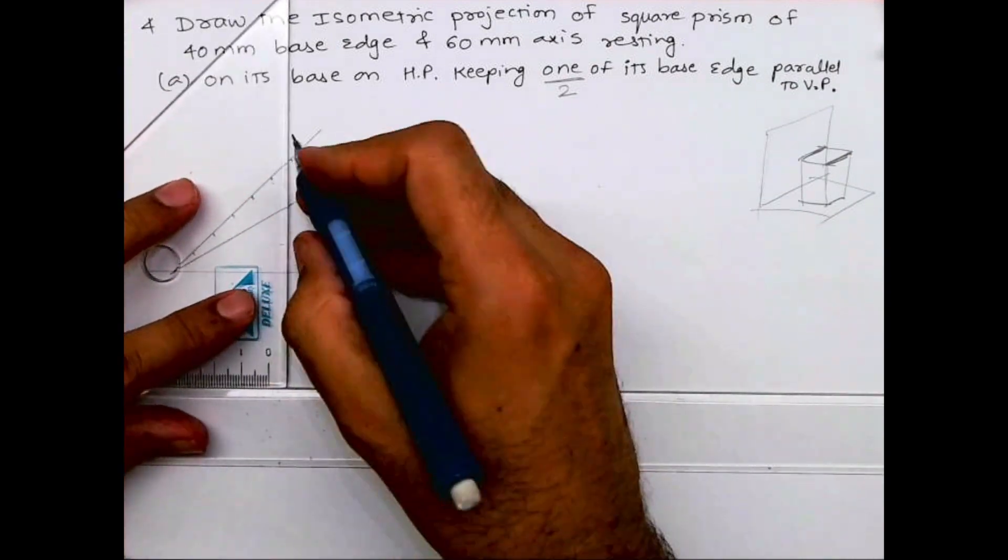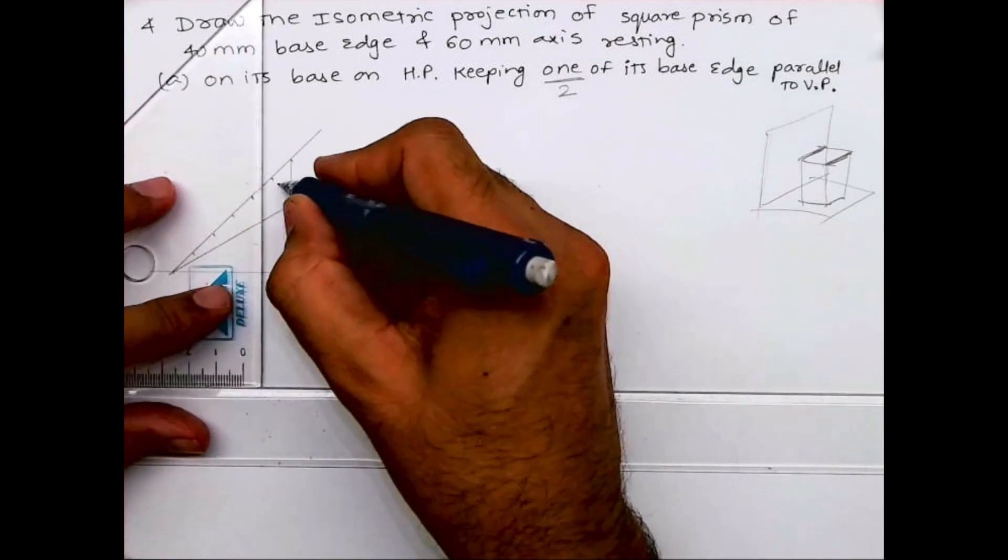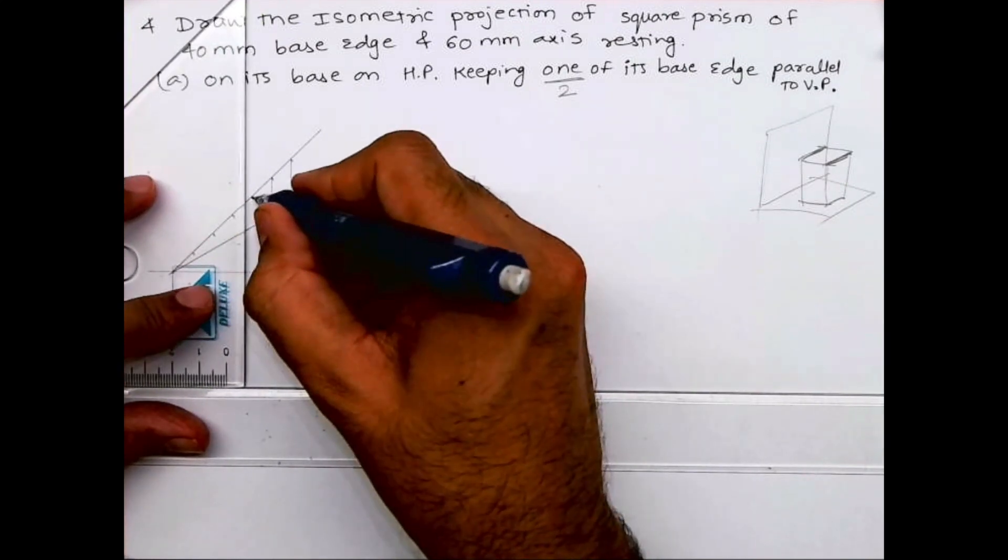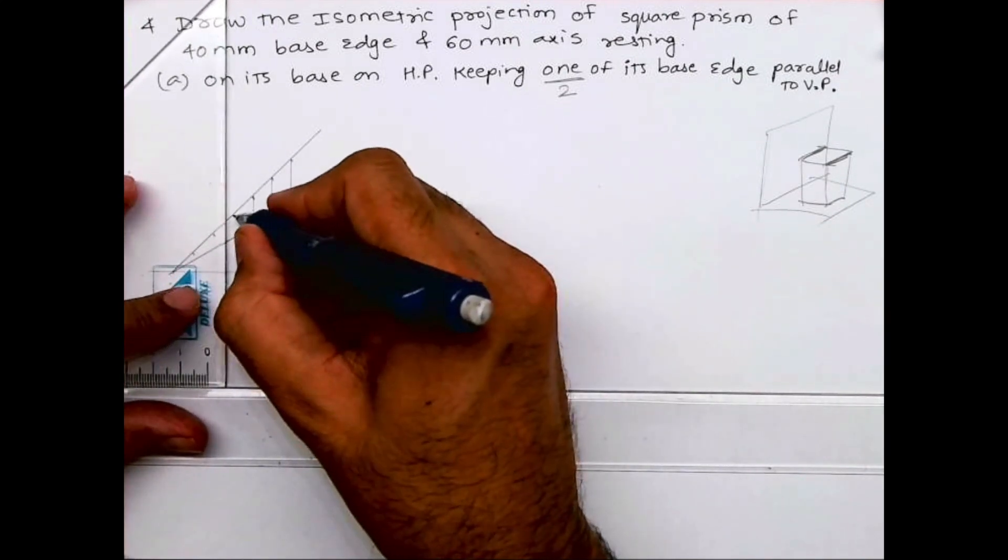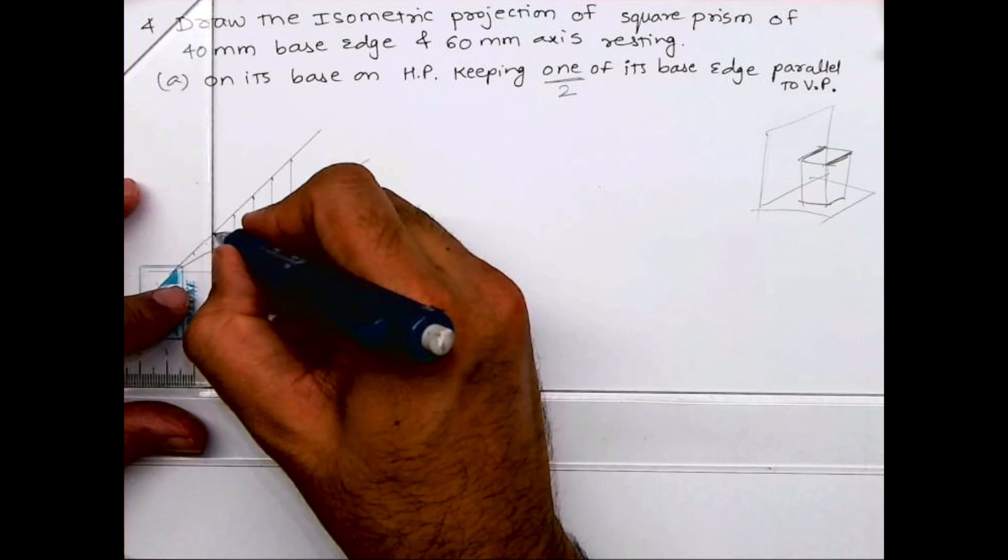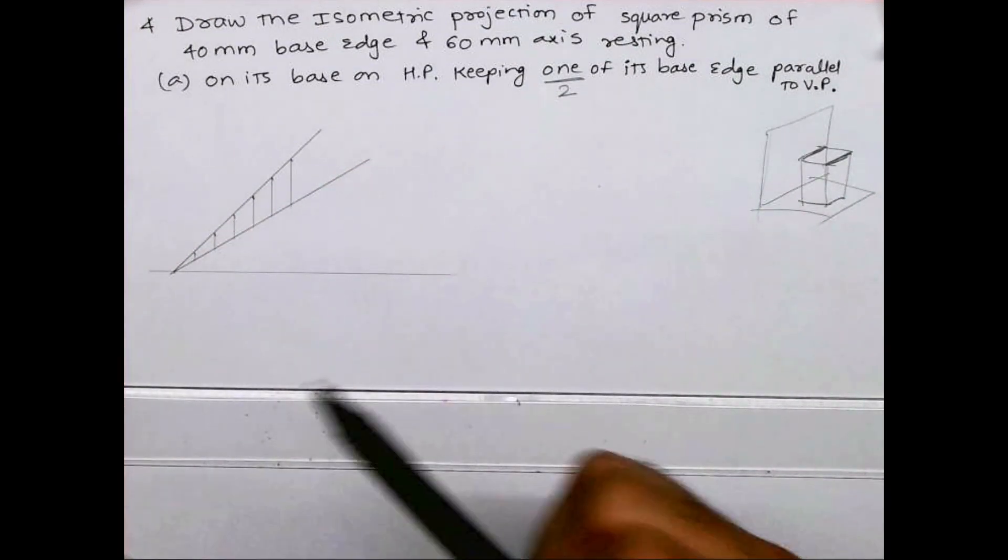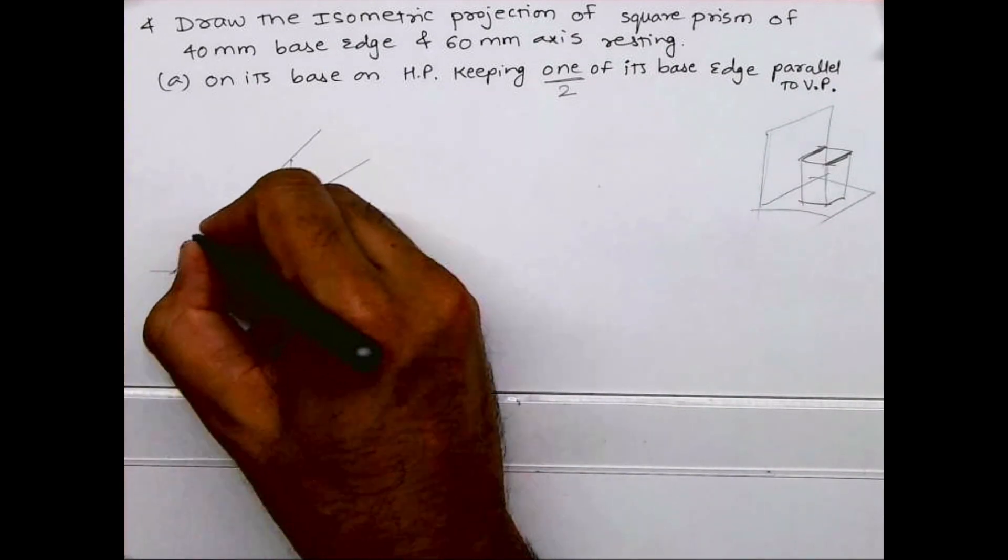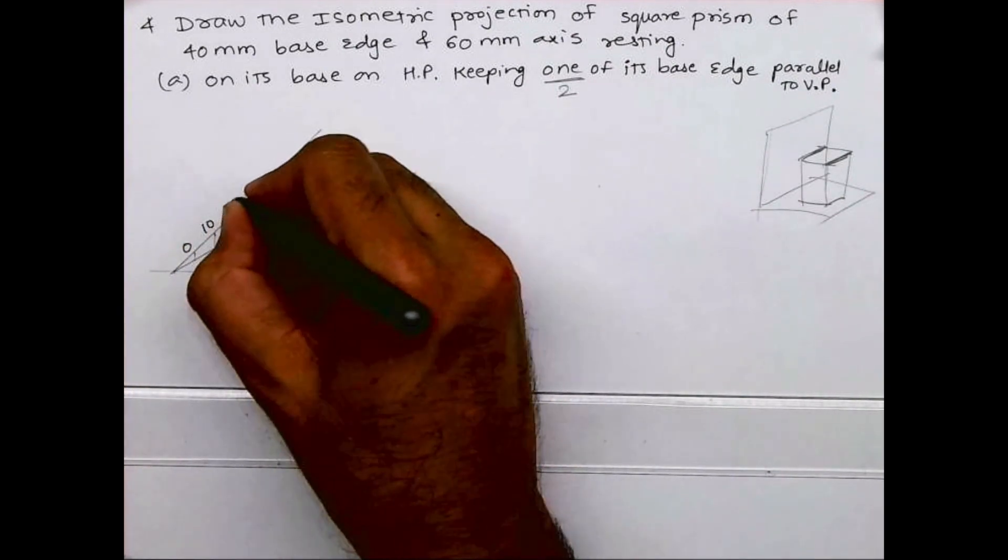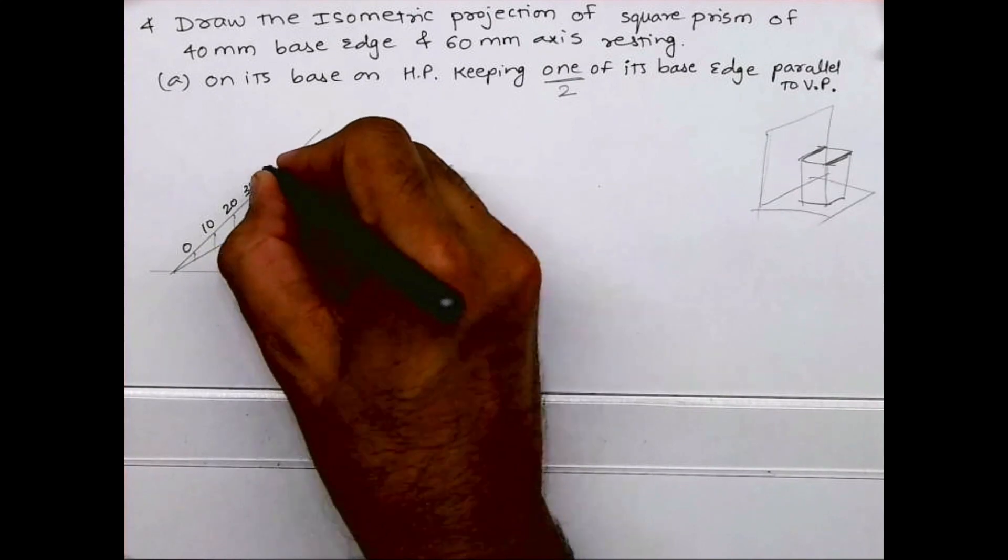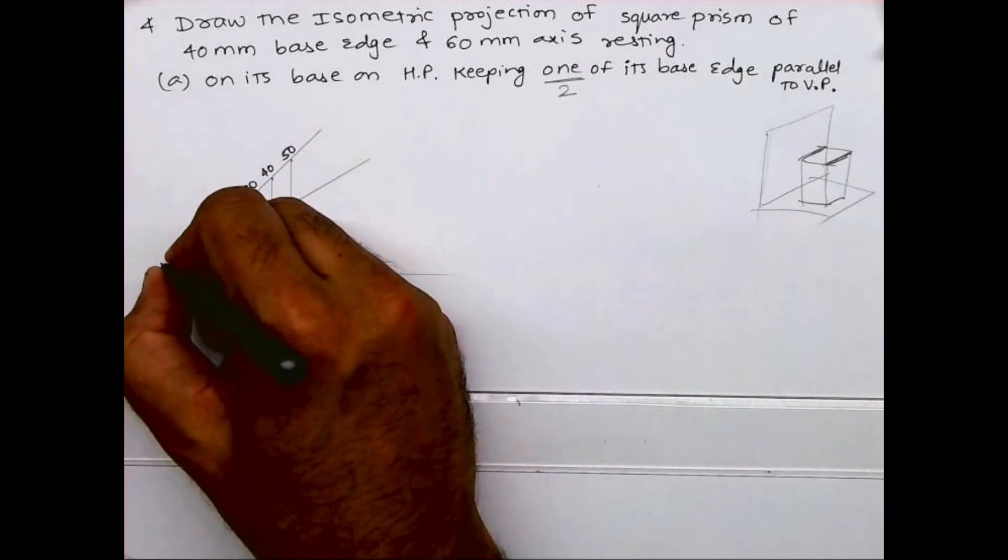So what I did: it is 60, so I took 0 to 50 and 10. From your 0, 10, 20, 30, 40, 50 and this is 10.